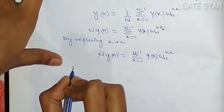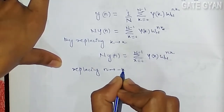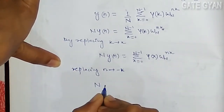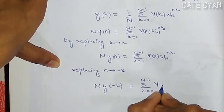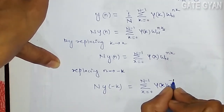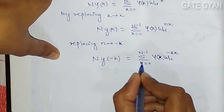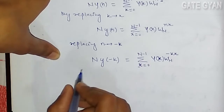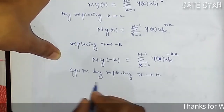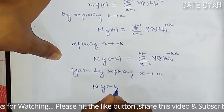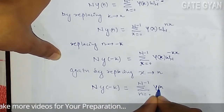Now in this expression I will replace n by -k. So N·y[-k] equals the sum from x=0 to N-1 of Y[x] times W_N^(-kx). Since these are constant terms, I can again replace x by n. So it becomes N·y[-k] = sum from n=0 to N-1 of Y[n] times W_N^(-kn).